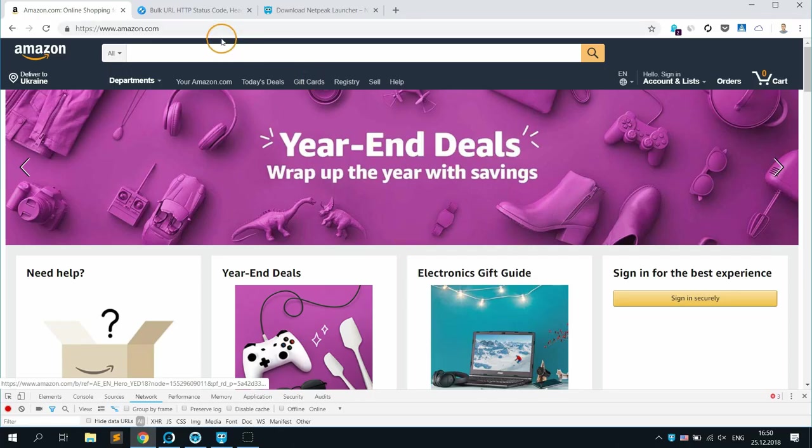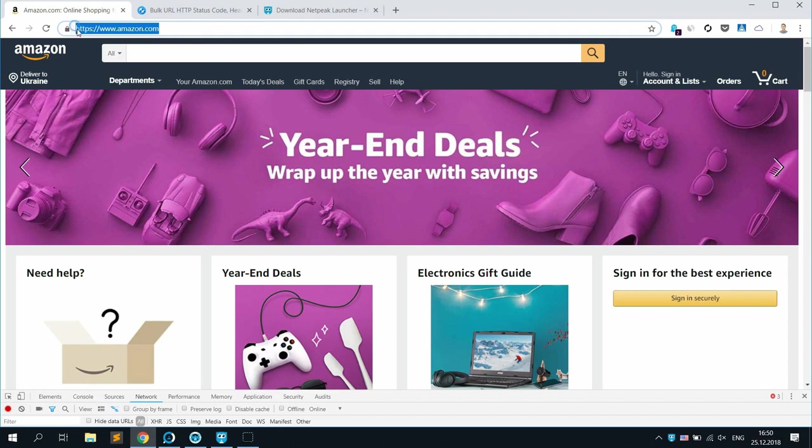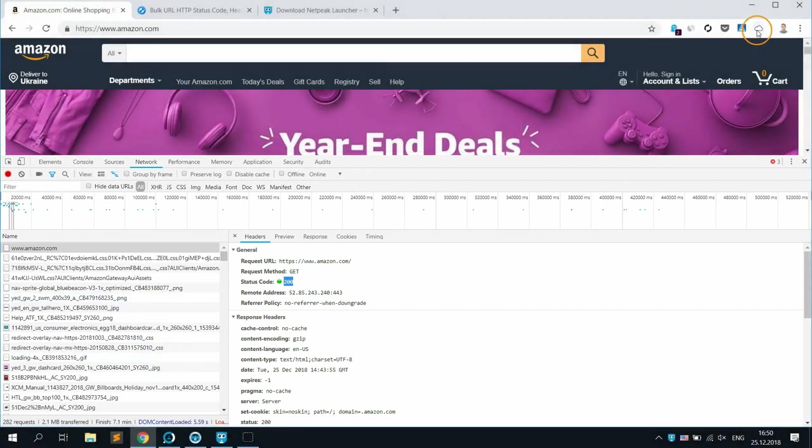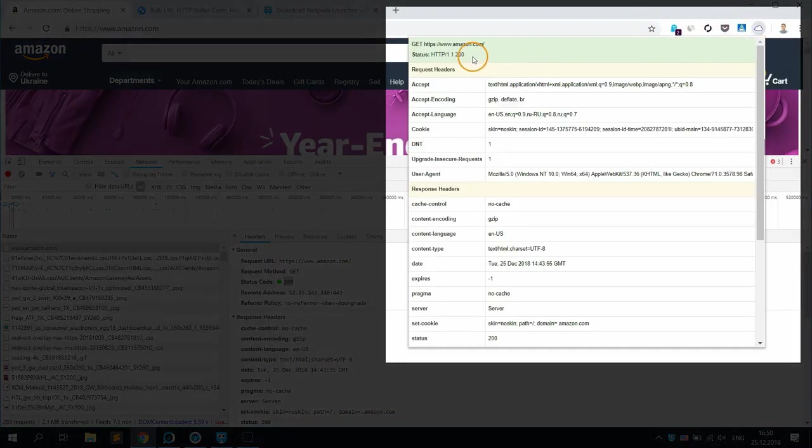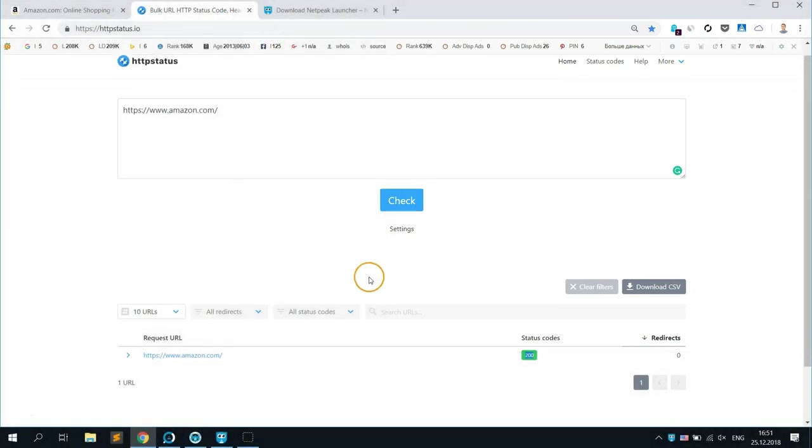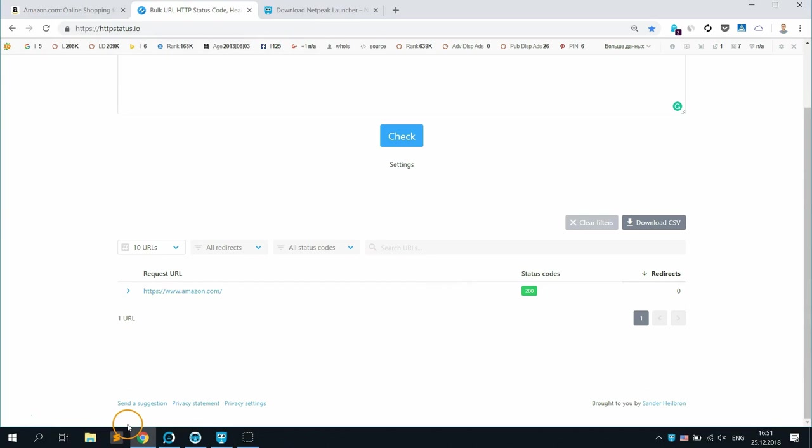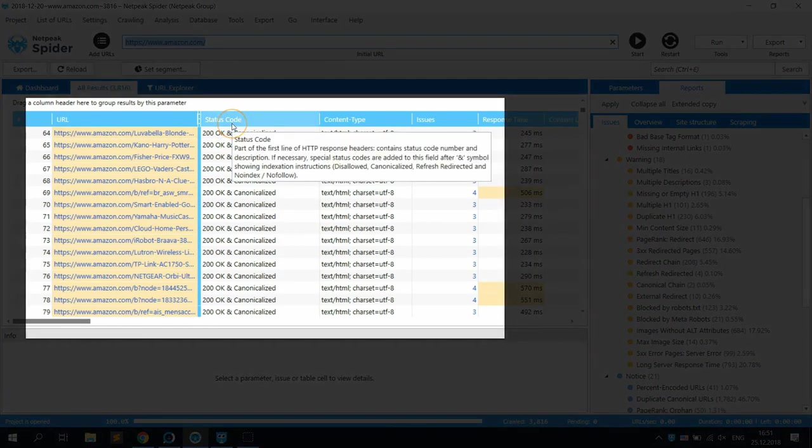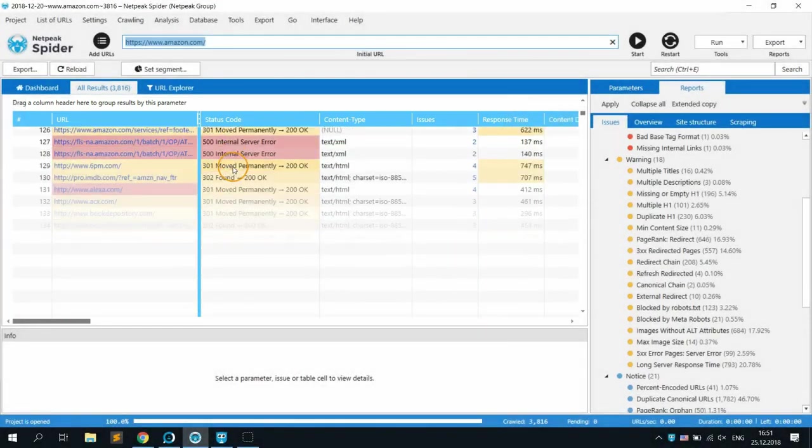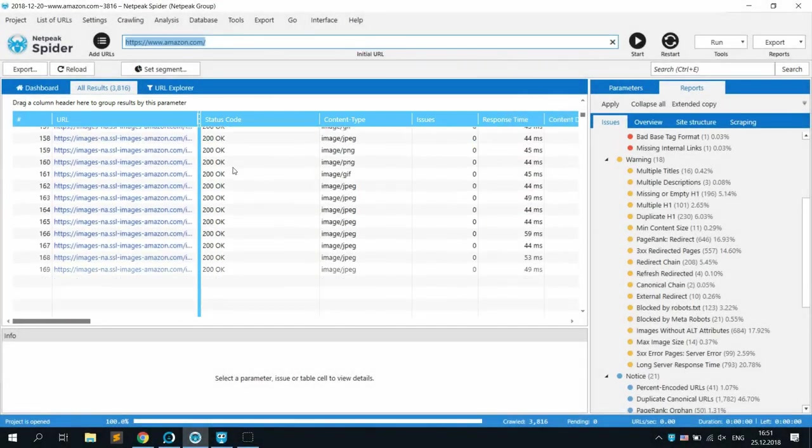There are several ways to check the status code. The first one is using developer tools in your browser. Use the network tab in it and see the status code of each document on the page. Then you have tons of extensions in your browser, or you can use online services or different SEO tools. But since I'm a Netpeak Software employee, I will show you how to find that using Netpeak Spider as your own HTTP status code checker and even more.